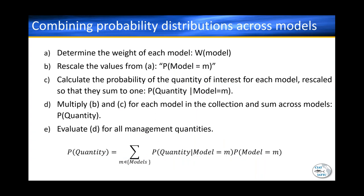Next, we combine probability distributions across all different models. Essentially, we sum the probability of the quantity of interest given the model, times the probability of the model. We determine the weight of each model, rescale it to form a probability summing or integrating to one, then calculate the probability of the quantity of interest for each model — again rescaling to sum or integrate to one — then multiply those together. We evaluate this for all the different management quantities of interest.